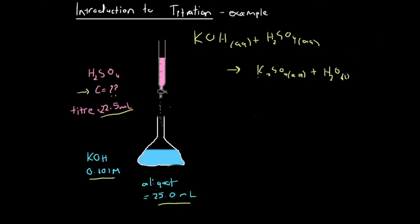We're dealing with stoichiometry here, and the most important part is to balance the equation. We've got two potassiums on the product side and one here, so we put a two in front of KOH. The sulfate on each side is balanced. Outside of the sulfate, we've got two hydrogens plus two hydrogens giving four hydrogens, plus two oxygens not part of the sulfate, so we put a two in front of water. Now the equation is fully balanced.